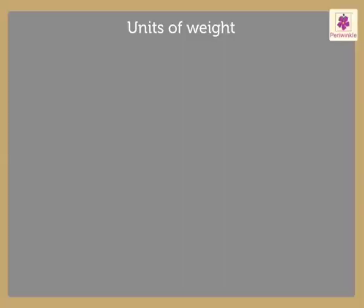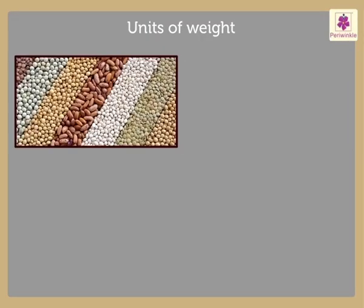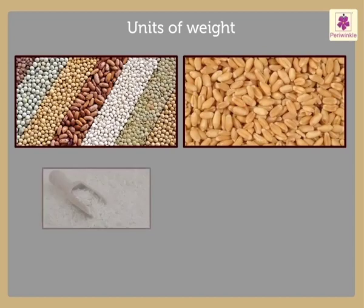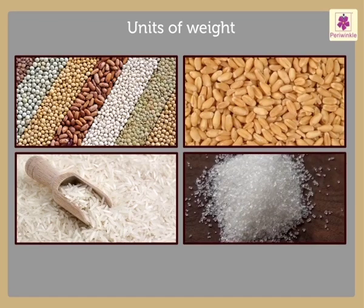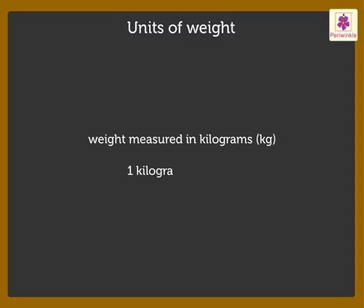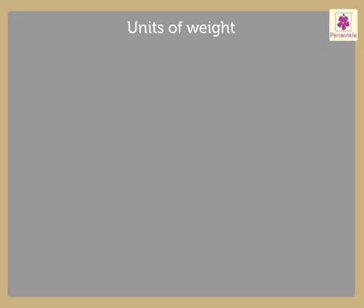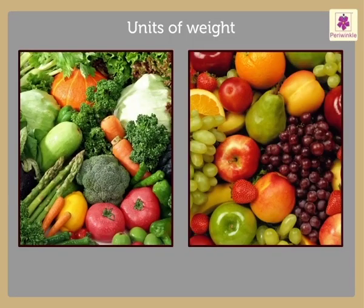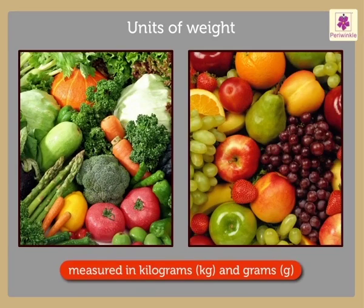Weights of grocery such as grains, wheat, rice, sugar for our personal consumption are measured in kilograms. One kilogram is equal to 1000 grams. We also buy vegetables and fruits in kilograms or grams.